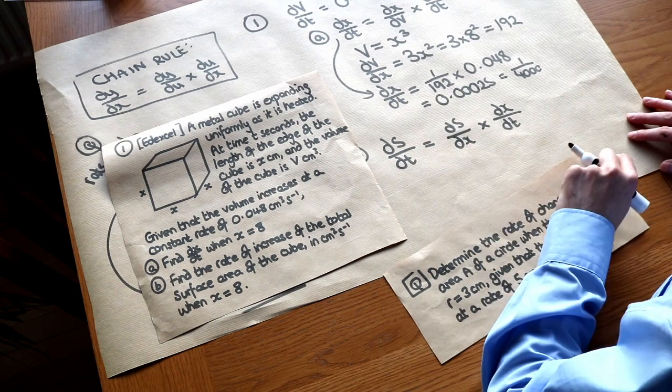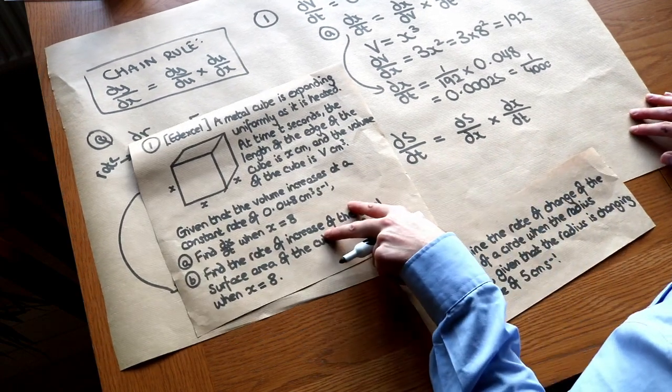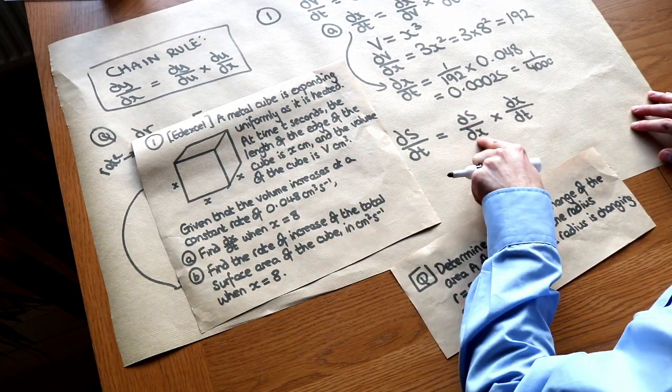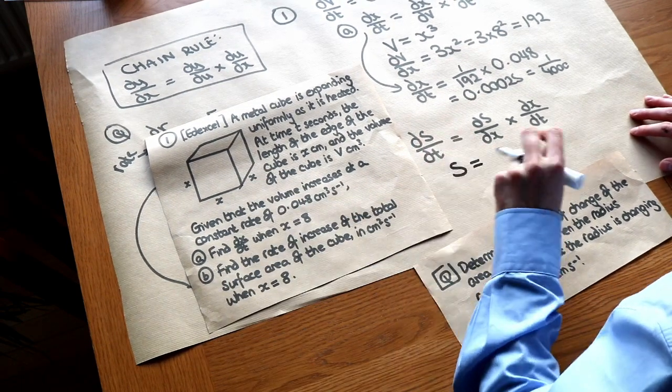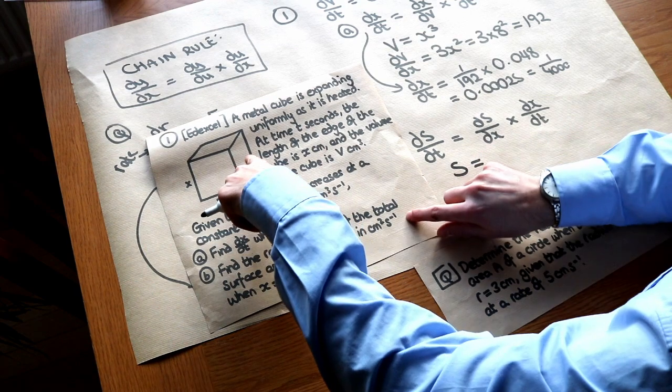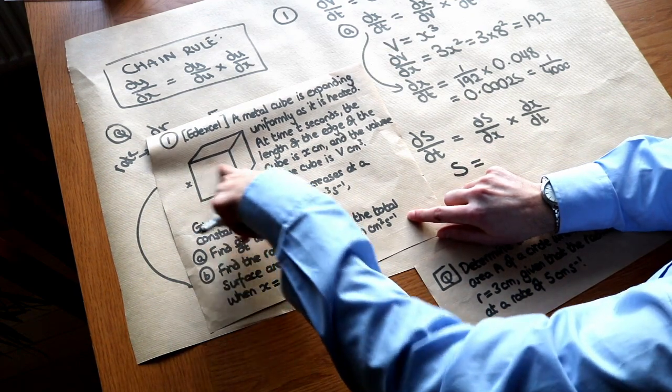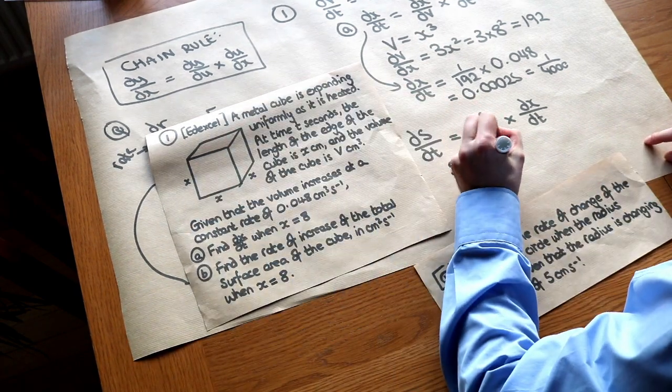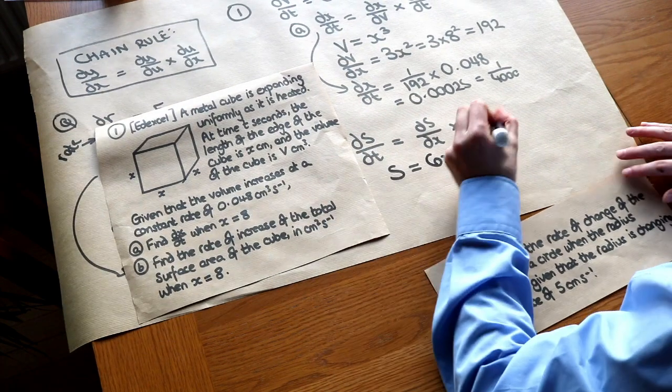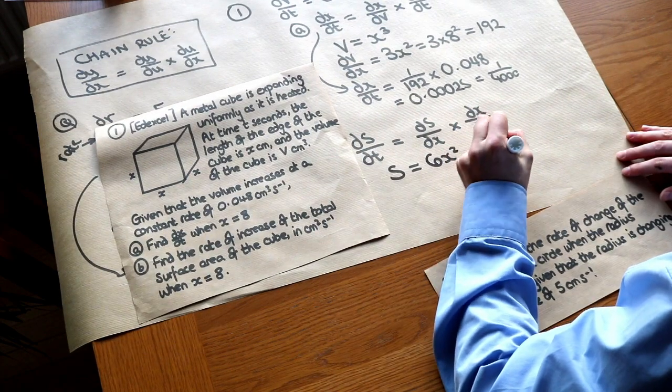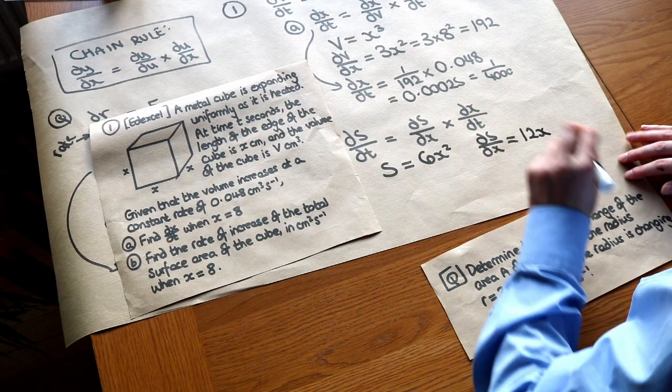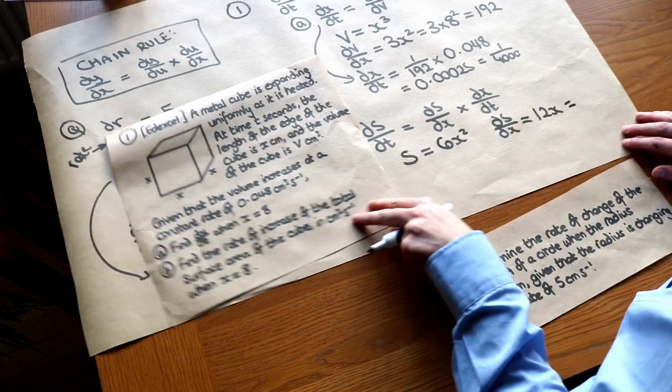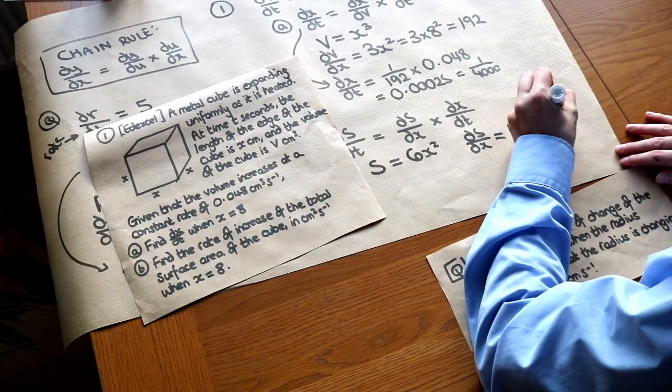Now we need to find ds over dx. Have we got a geometric formula relating s and x? Well, yes, we do. The surface area of the cube is, well, we've got six faces, and each area is x squared, so it's 6x squared. That means ds over dx is equal to that differentiated, which is 12x, and if x is 8, 12 times 8 is 96. So now we have everything we need.